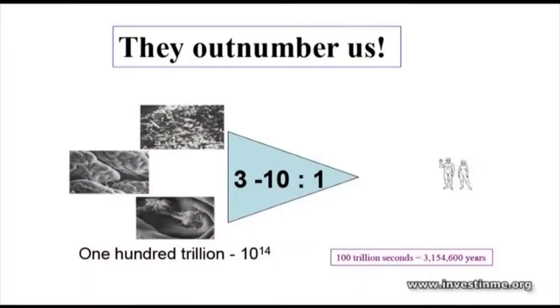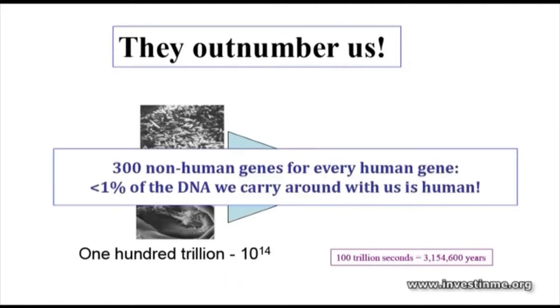Microbes probably outnumber us by 3 to 10 to 1. What's even more impressive is that for every gene we have, there are about 300 genes encoded by the microbes that live in our gut. So less than 1% of the DNA we carry around with us is our own — the rest is microbial in origin.